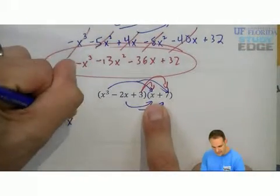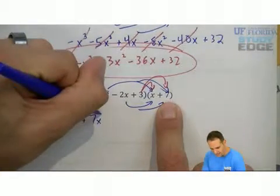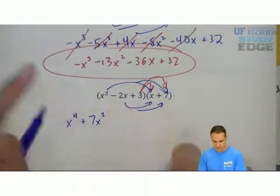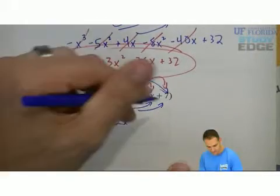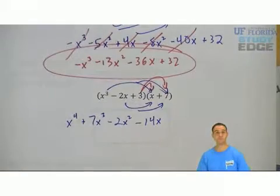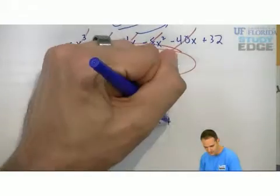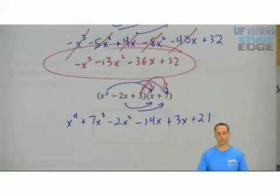x cubed times x would be x to the fourth. x cubed times 7 would be 7x cubed. Do it again. Negative 2 times x is negative 2x squared. Negative 2x times 7 is minus 14x. One more time. 3 times x is 3x. 3 times 7 is 21.